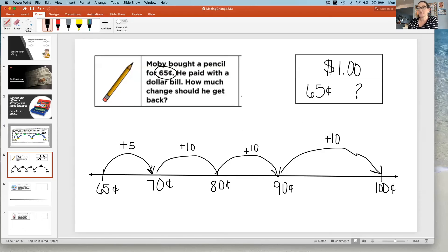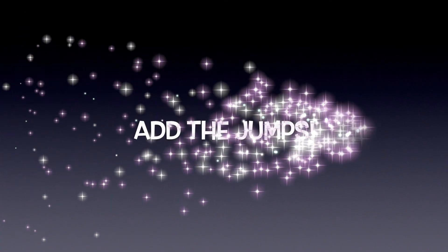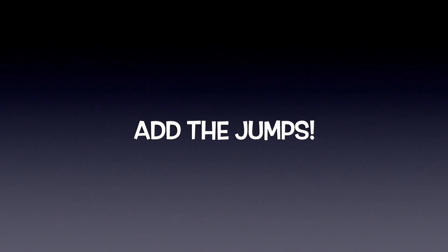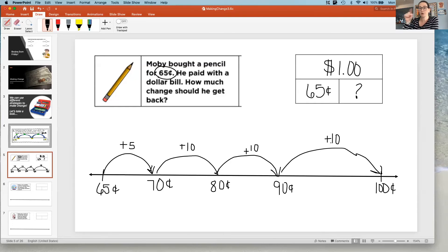Now to figure out our answer we need to add up all of these jumps. So how much total did we have to add to get to a dollar? Let's see: 10, 20, 30, plus five — 35 cents. And that would be our answer. He would get 35 cents back.